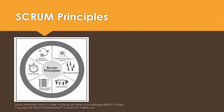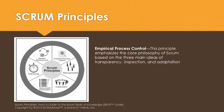The first principle is empirical process control. This principle emphasizes the core philosophy of Scrum, based on three ideas: transparency, inspection, and adaptation.